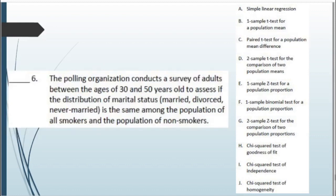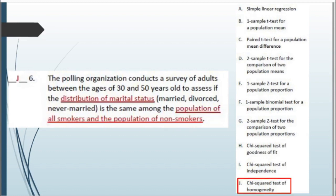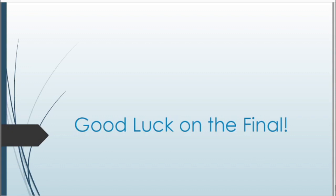Scenario 6: The polling organization surveys adults between ages 30 and 50 to assess if the distribution of marital status (married, divorced, never married) is the same among the population of all smokers and the population of non-smokers. This is a chi-squared test for homogeneity. For homogeneity, we look at multiple populations to see if the distribution of the same variable is the same across those populations. That's exactly what this scenario is testing. Thank you for watching, and good luck on the final exam and with all your future endeavors!